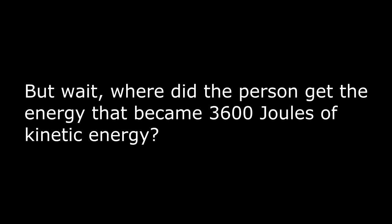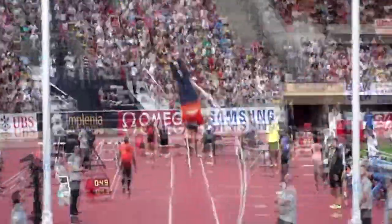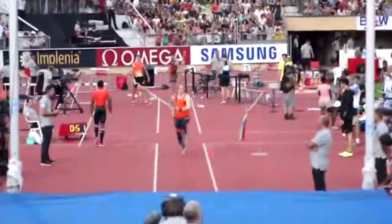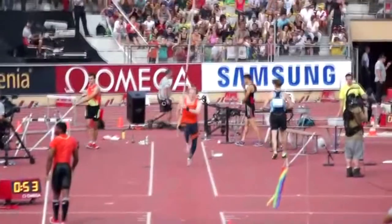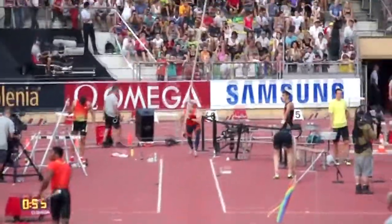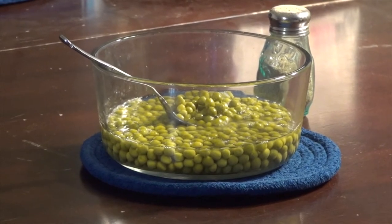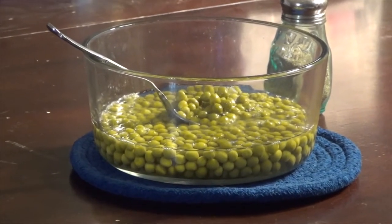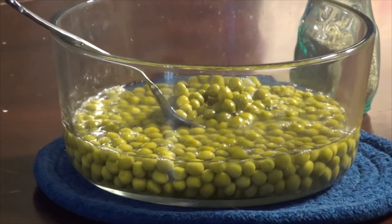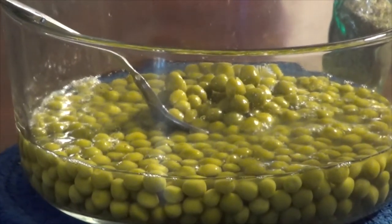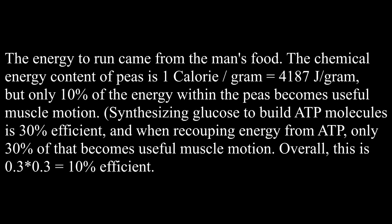But wait — where did the person get the energy that became 3600 joules of kinetic energy? Before he began running, he ate some peas for breakfast. How many bowls full of peas do you think you would have to eat to get 3600 joules of kinetic energy? The energy to run came from the man's food.